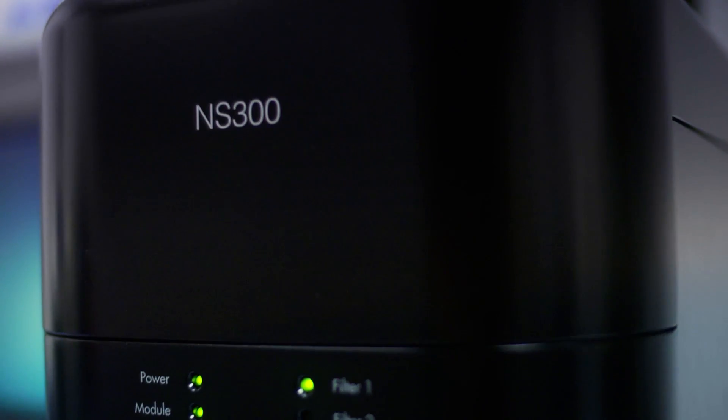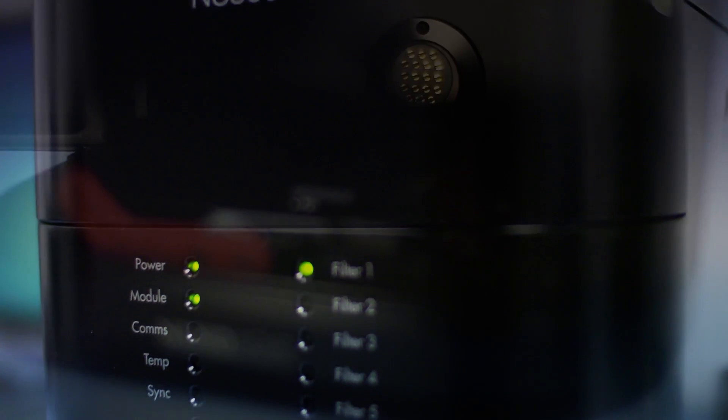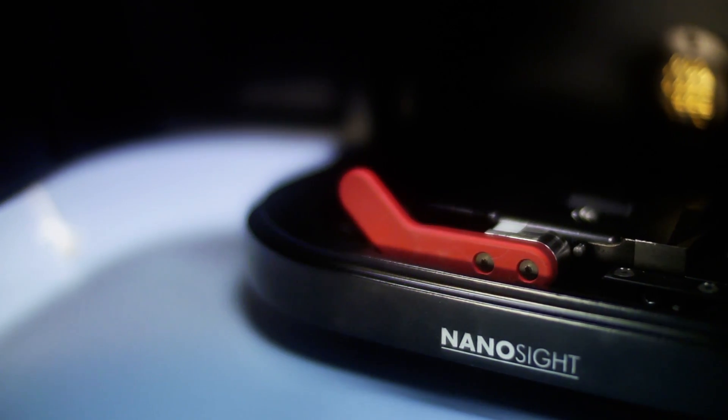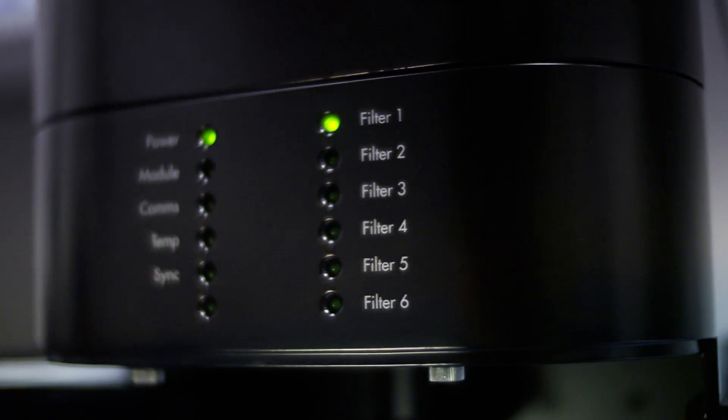The NanoSight NS300 from Malvern Instruments is capable of providing additional complementary information to that provided by Dynamic Light Scattering, or DLS.